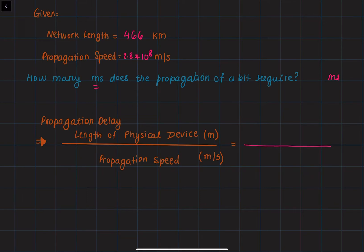To answer this question, we're going to use the propagation delay formula, which says that the length of the physical device in meters divided by the propagation speed in meters per second will give us our propagation delay.